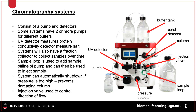A sample loop is critical for injecting sample onto the chromatography resin. Systems also have monitors that will cause an alarm if, for instance, there is too much pressure, and can automatically turn off the system to prevent damage.